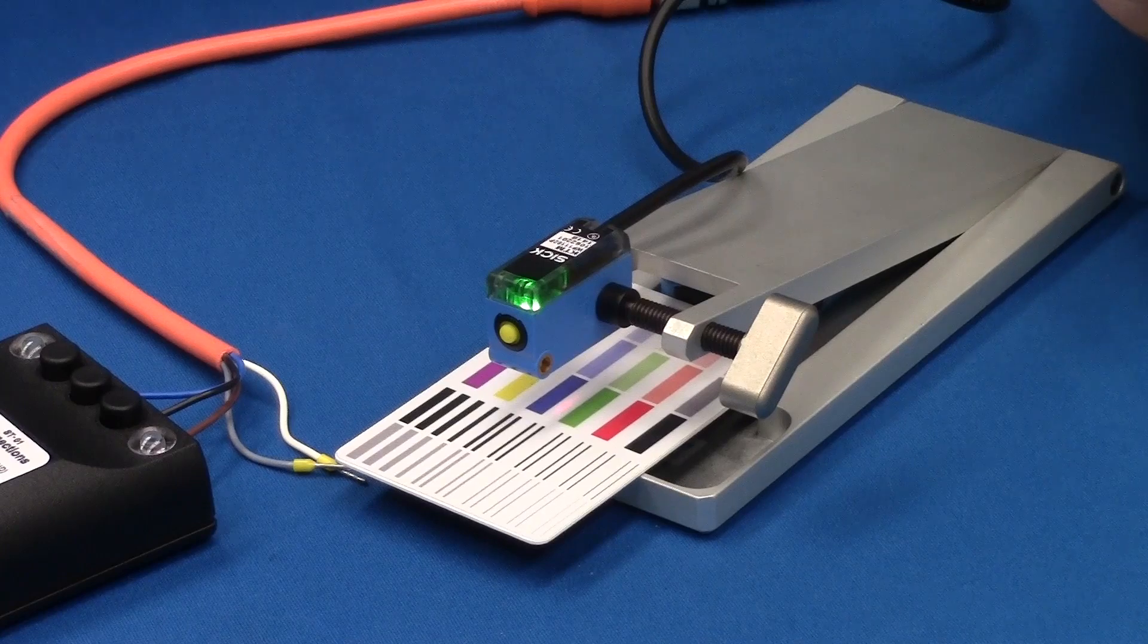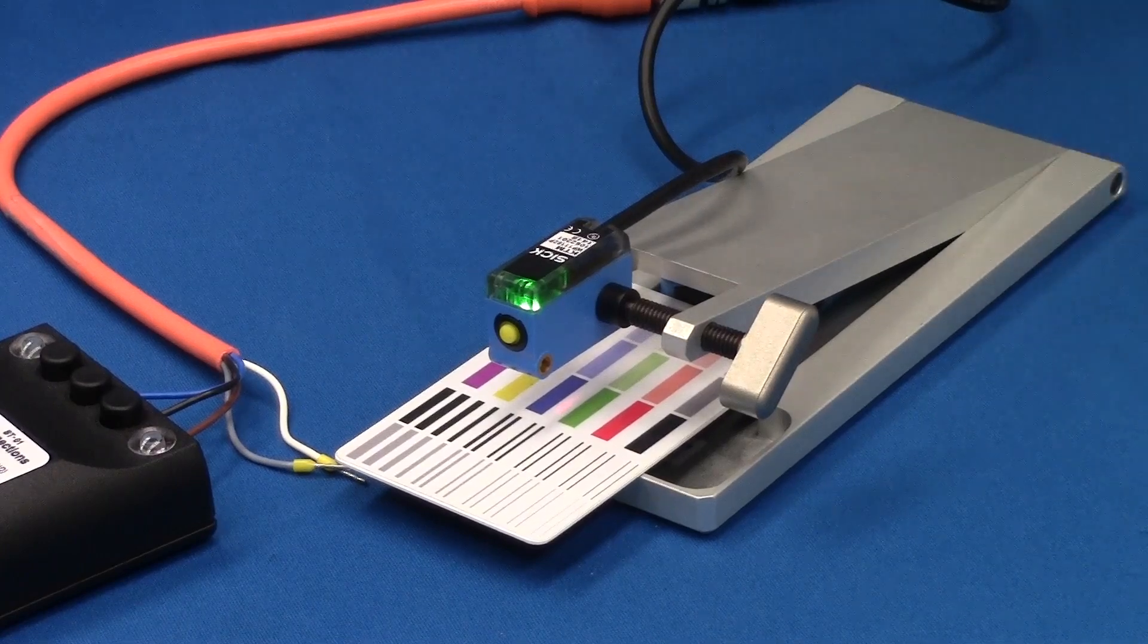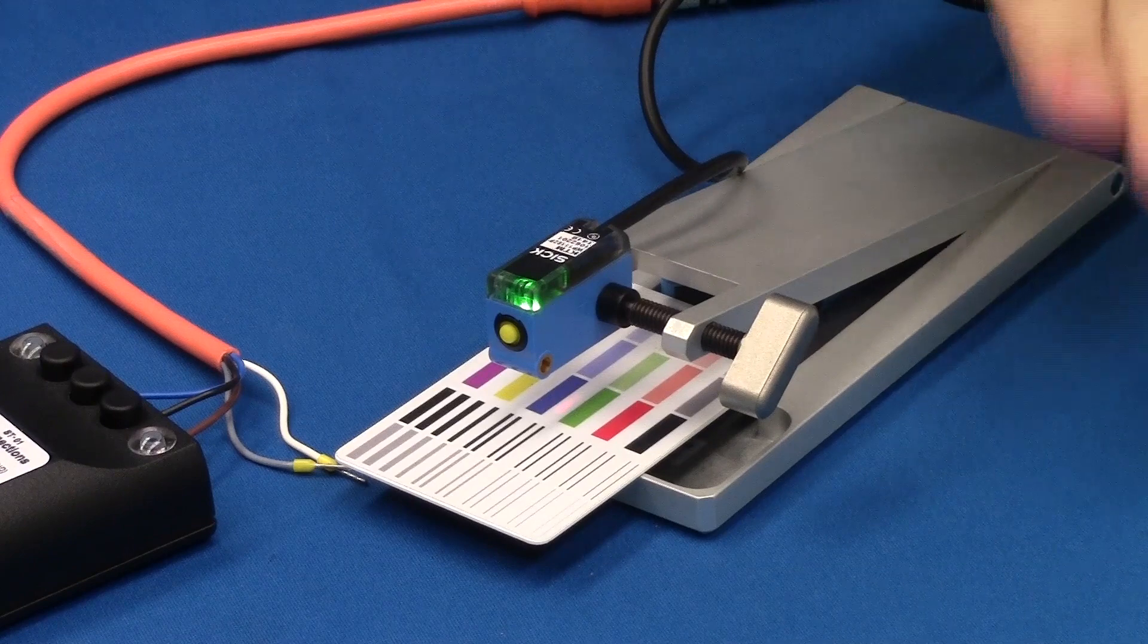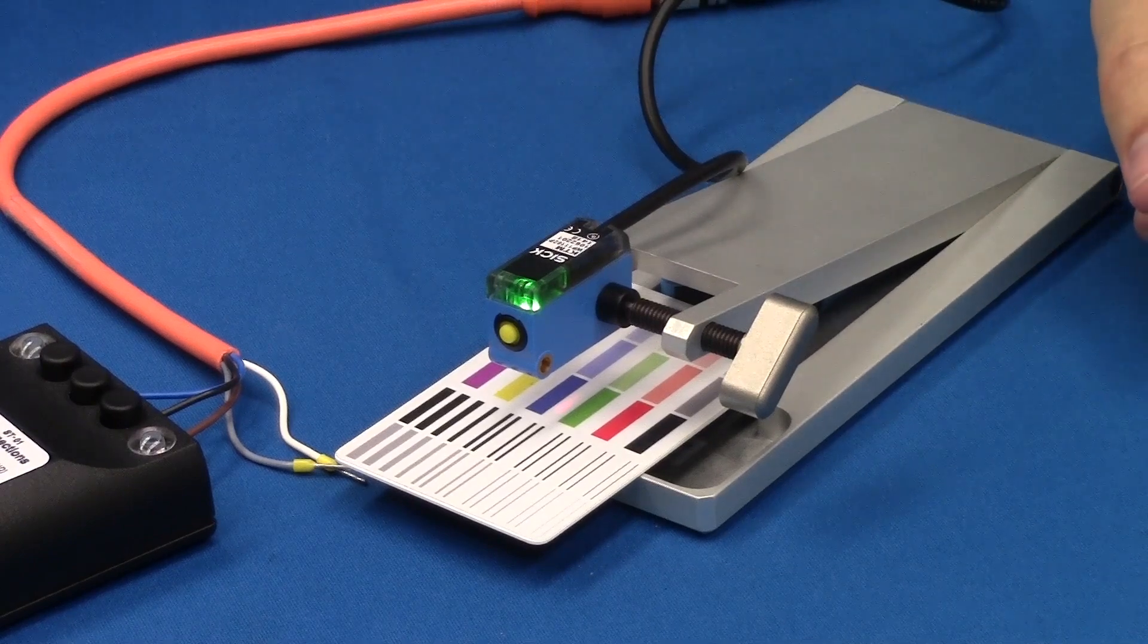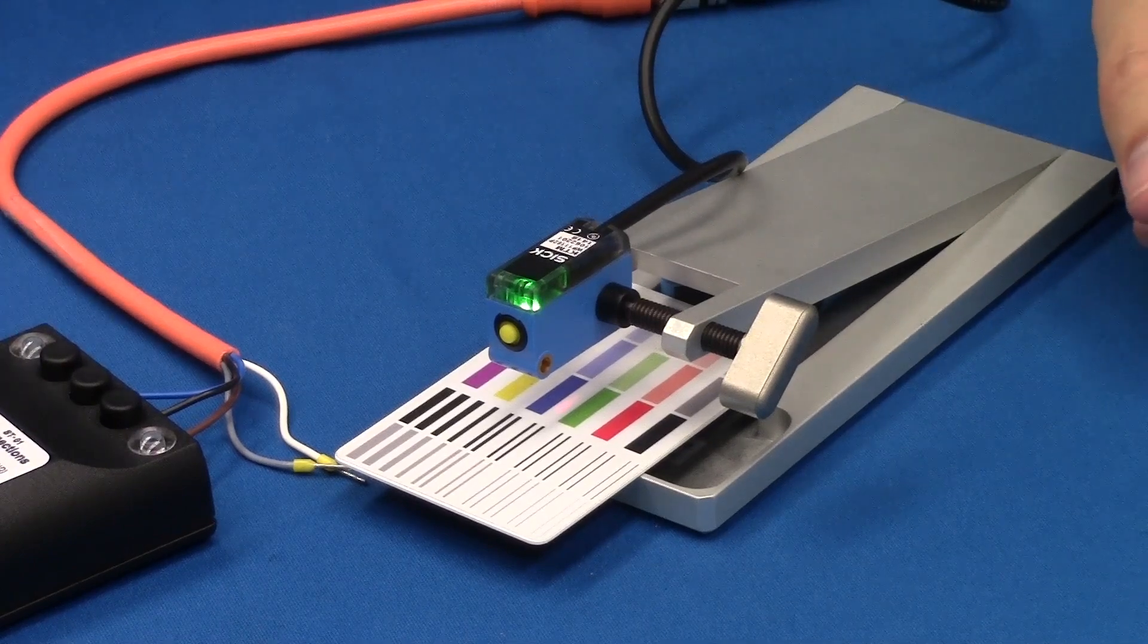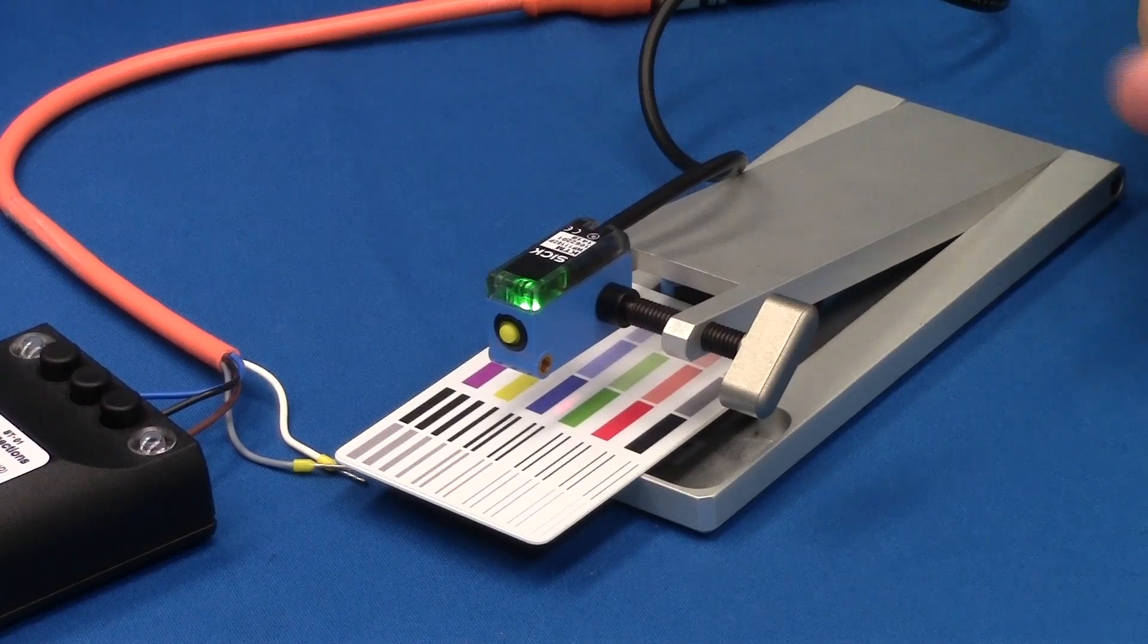On contrast sensors, it's very important to get a sensing distance that is very stable, because the sensing distance will change the color that the sensor sees. For the KTM, we need a sensing distance of 12.5 millimeters.